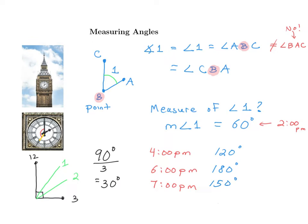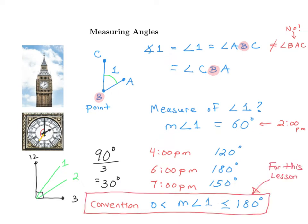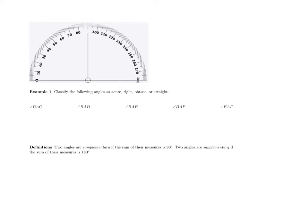We have a convention: when we talk about the measure of a given angle, we want it to be some positive number, and we also want it to be either equal to 180 or less than it. We're never going to talk about angles that go beyond a straight line.